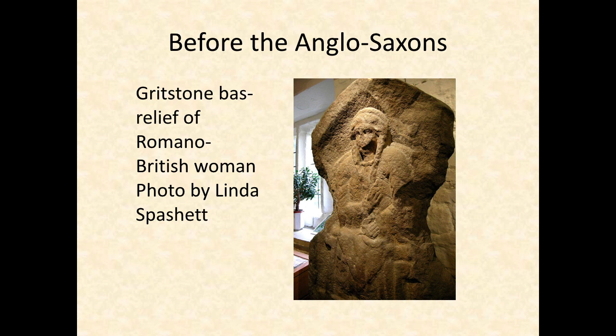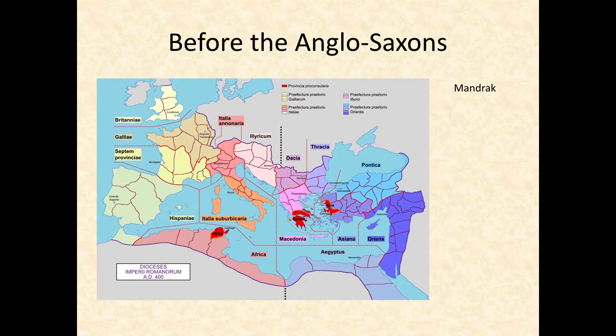Roman religions, including Christianity, were adopted by some peoples living in Britain. When I say Roman, keep in mind that the Roman Empire at this time was so big that Romans included both Western and Eastern Europeans, Middle Easterners, and Africans. Bodies in late Roman cemeteries in Britain have been identified as coming from Africa and possibly even China.